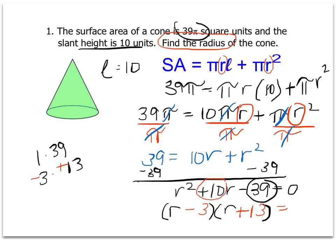And that will help, hopefully, reduce some mistakes. And then my final step, then, of course, to solve for r, my r answer, because that's r minus 3, would be positive 3 and negative 13.